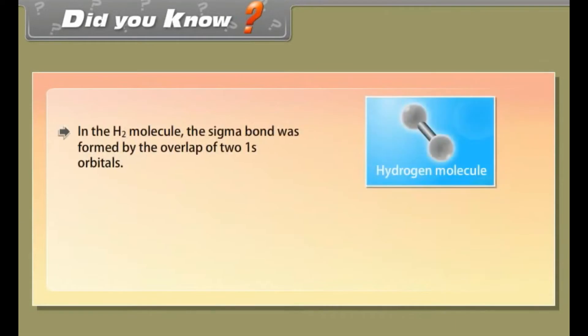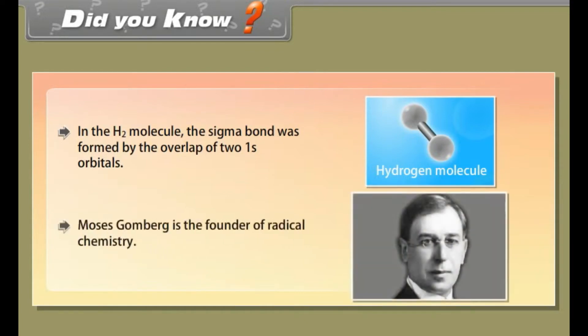Did you know? In the hydrogen molecule, the sigma bond was formed by the overlap of two 1s orbitals. Moses Gomberg is the founder of radical chemistry.